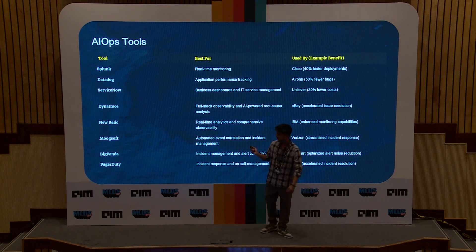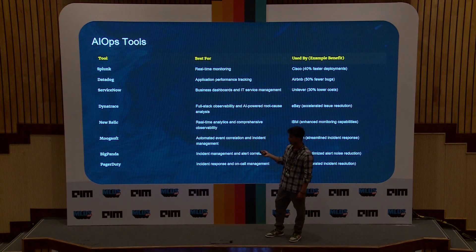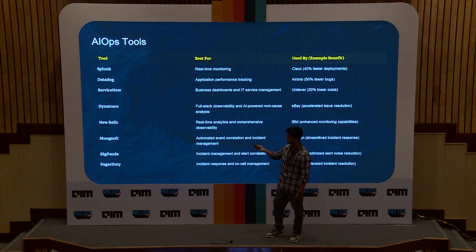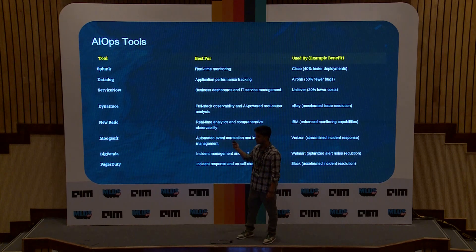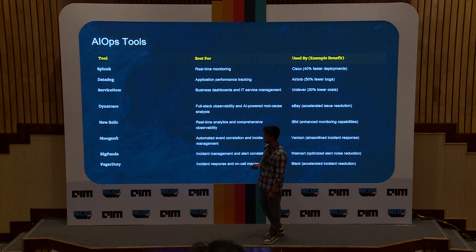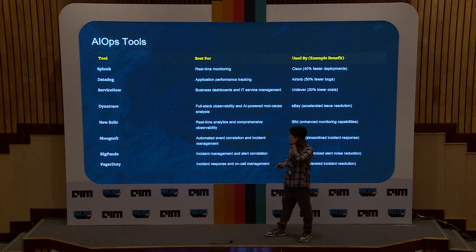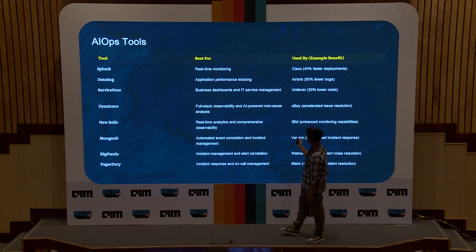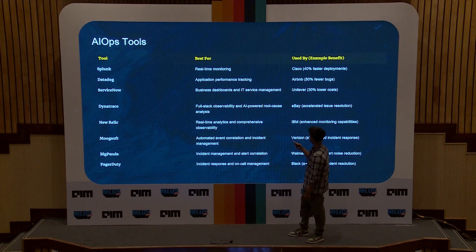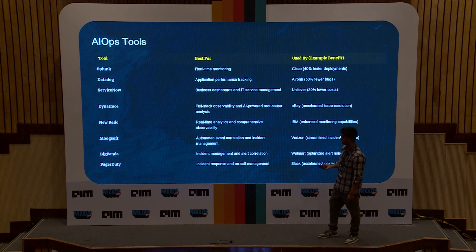Here are some important common AI observability tools that use AI: Splunk, Datadog, ServiceNow, Dynatrace, New Relic, Moogsoft, BigPanda, and PagerDuty. Most of them are paid, but there are also other options. The slide shows what each tool is used for and which companies use them — for example, Cisco using Splunk, Airbnb using Datadog. You can take a picture to read about this later.